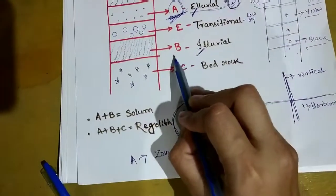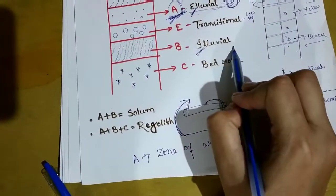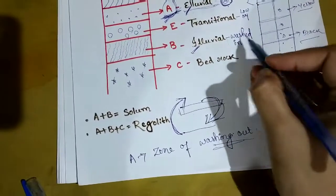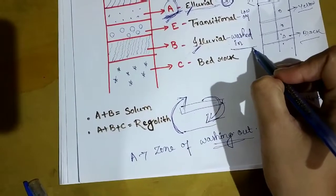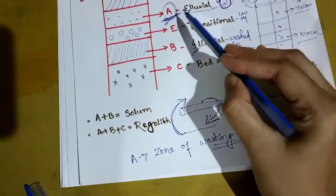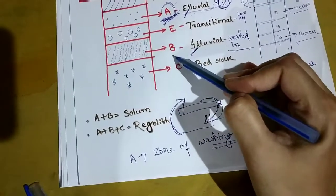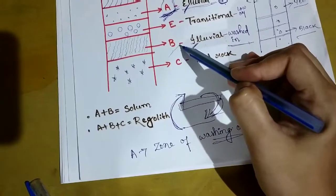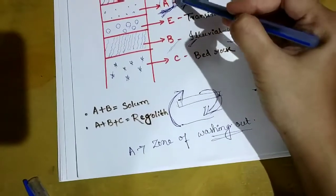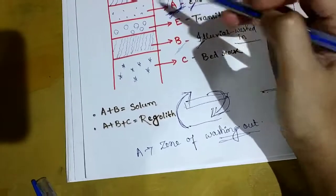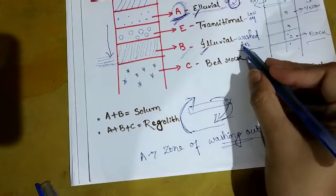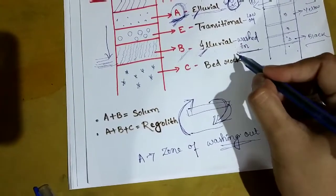The B horizon is also known as the illuvial horizon or zone of washing in. Whatever material gets washed out from the A horizon gets deposited and accumulated in the B horizon. That's why we see accumulation of iron and aluminum oxides as well as different silicate clays here. So whatever is leached or percolated from A horizon comes and deposits in B horizon.